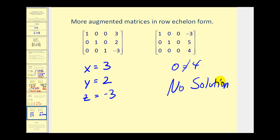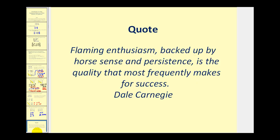That's going to do it for this video. In the next video, we'll talk about how to start with an augmented matrix and transform it into either row echelon form or reduced row echelon form. I hope you found this introduction helpful. Thank you and have a good day.